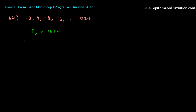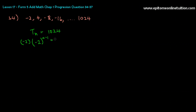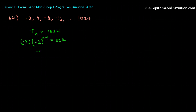Tn is: a is negative 2, and r is 4 divided by negative 2, that's negative 2, to the power n minus 1, is equal to 1024. You can shift over your negative 2 first. You cannot do negative 2 times negative 2, because there's a power n minus 1 here. Students, please remember your indices.